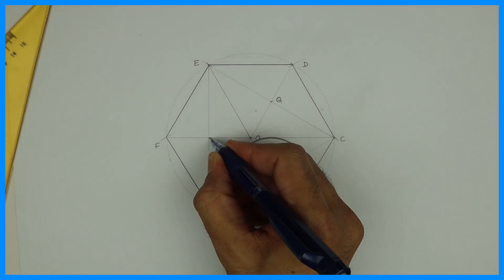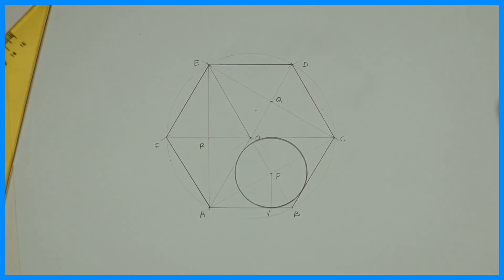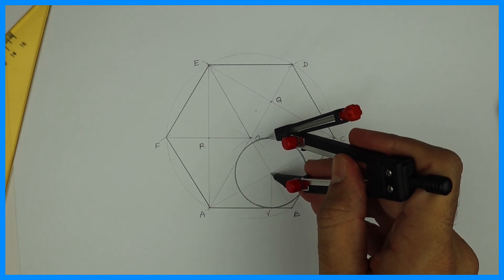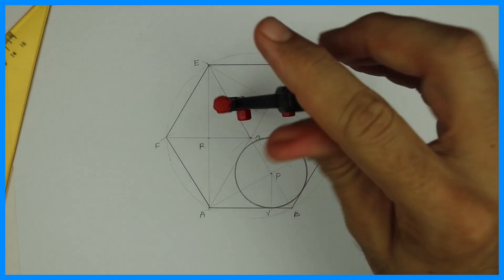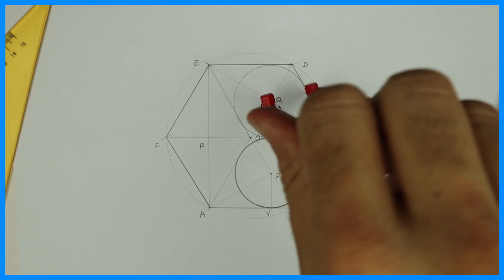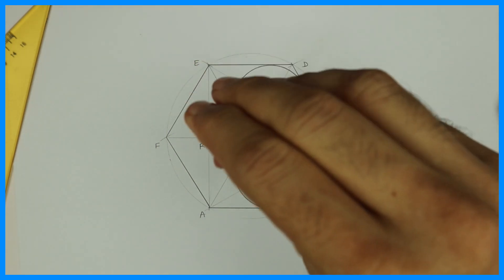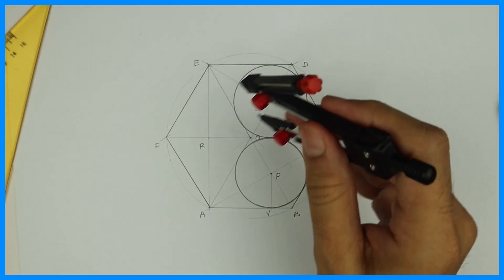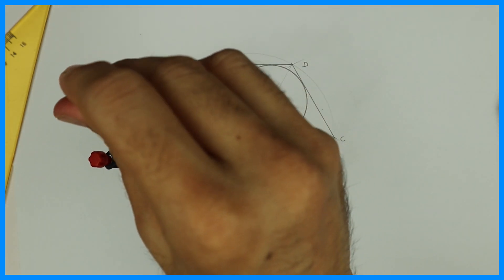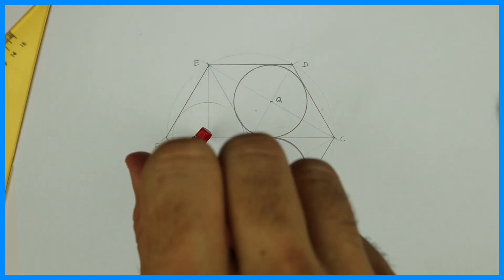Now take the same radius as PV and from Q and R you can draw the required circles. So we got three circles inside a hexagon touching two sides and other two circles. Thank you.